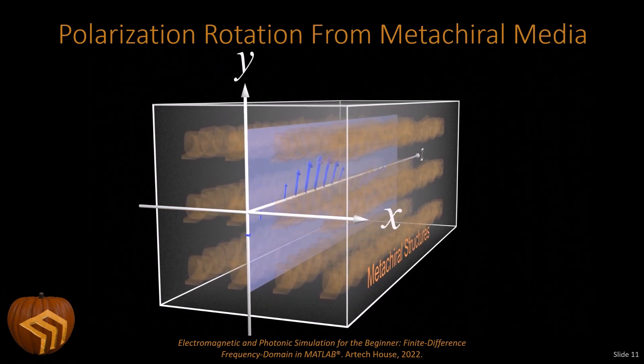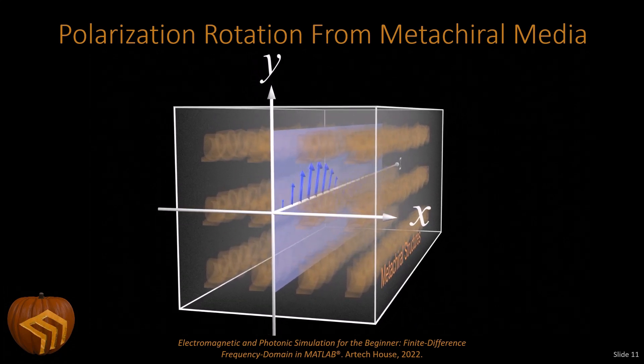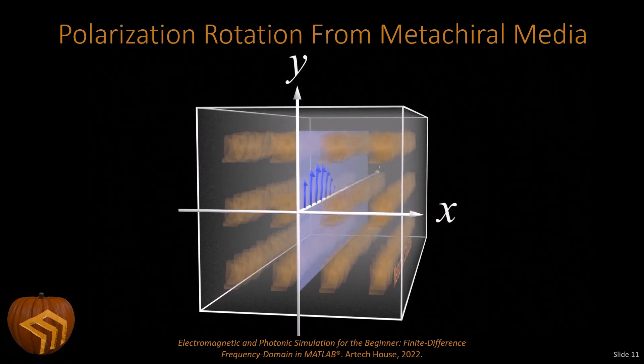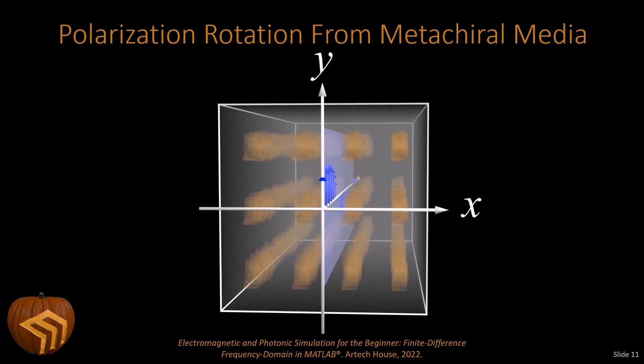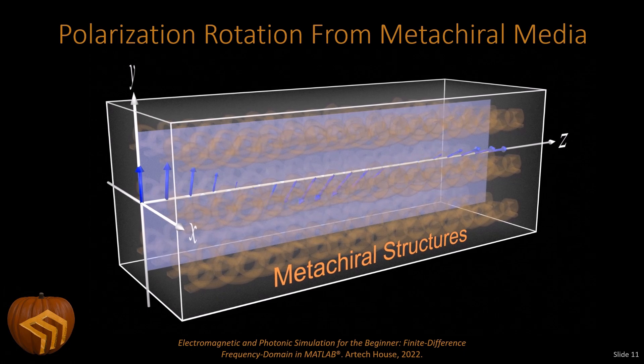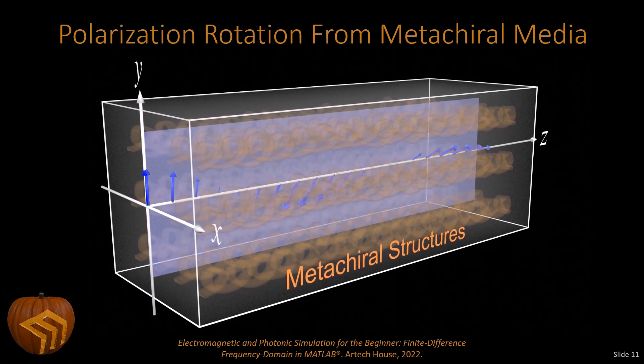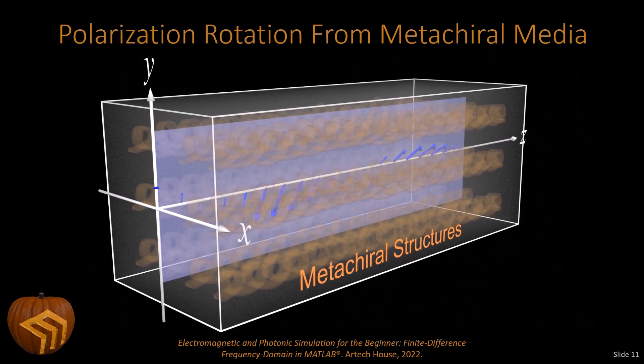But I want to draw an analogy here to optical activity because I think that's the best way to understand that. And there's three commonalities with optical activity. First, if the wave were to reflect somewhere in the middle of this and come out, this metachiral structure does not undo that polarization rotation. In fact, it just keeps rotating and it adds to it. So this is also non-reciprocal. That's a second commonality to a chiral media. And then the last thing is that when the wave leaves this, the polarization is retained, whether that's transmitted or reflected.